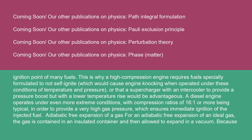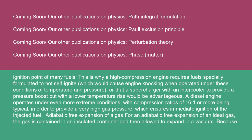This is why a high-compression engine requires fuels specially formulated to not self-ignite (which would cause engine knocking) when operated under these conditions of temperature and pressure, or that a supercharger with an intercooler to provide a pressure boost but with a lower temperature rise would be advantageous. A diesel engine operates under even more extreme conditions, with compression ratios of 16 to 1 or more being typical, in order to provide a very high gas pressure which ensures immediate ignition of the injected fuel.